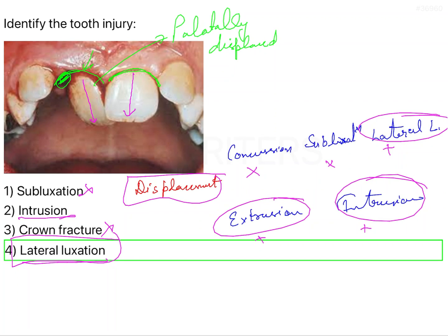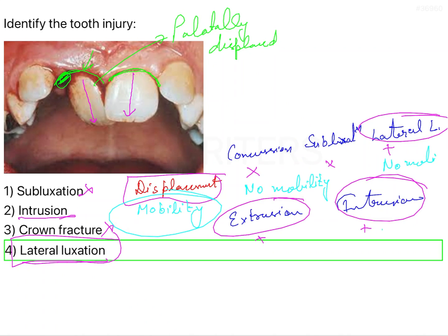Let me give some more details about the different luxation injuries. Regarding mobility: in concussion there is no mobility, and in lateral luxation there is also no mobility. In intrusion there is no mobility either. But in extrusion, mobility may be present, and in subluxation mobility is definitively present.